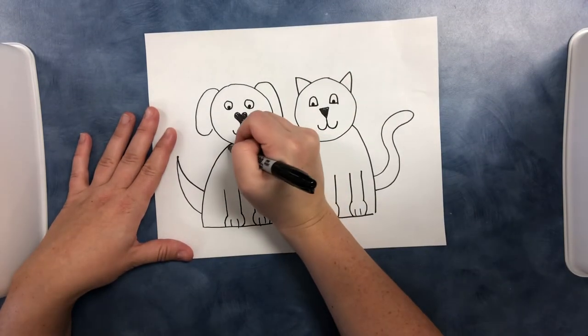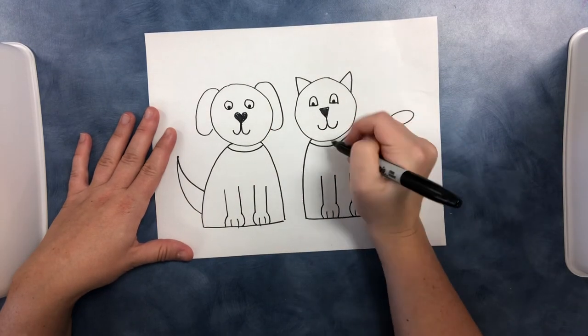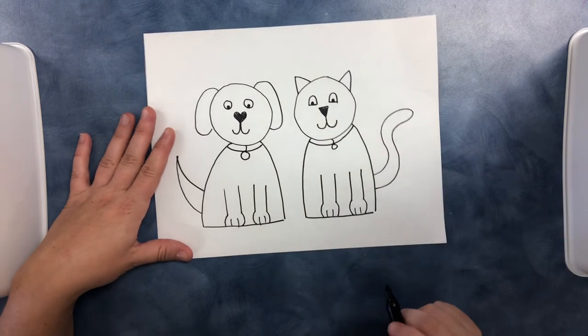And if you want to add a collar right underneath the neck you can draw a little collar and even give them a name if you want.